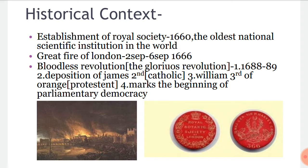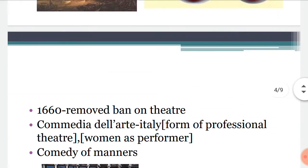Next, we have the Bloodless Revolution. After Charles II, his brother James II became the king of England. He was a Catholic, but most members of parliament and the people of the country were Protestants. So parliament invited William III of Orange, who was the husband of James's daughter Mary, and he was also a Protestant. William III entered England and James II fled to France. This period, from 1688 to 1689, is called the Bloodless Revolution, and it marks the beginning of parliamentary democracy.